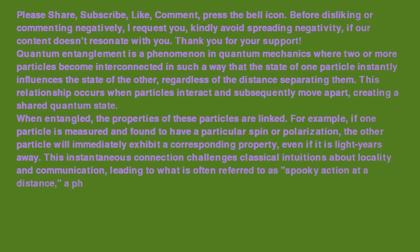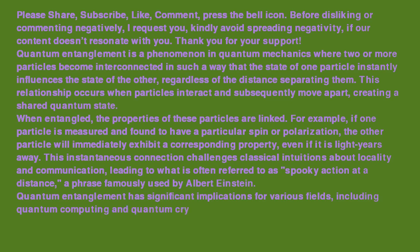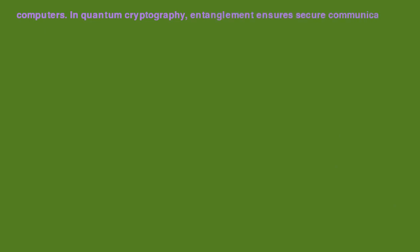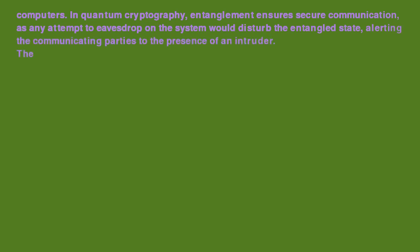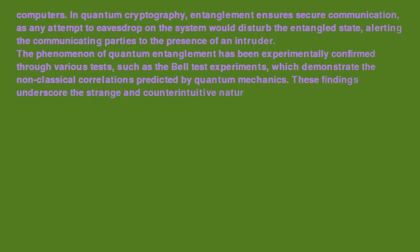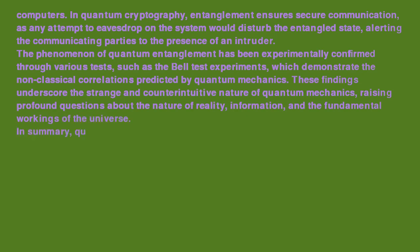Quantum entanglement has significant implications for quantum computing and quantum cryptography. In quantum computing, entangled particles are used to create qubits, the fundamental units of information that allow quantum computers to perform calculations much faster than classical computers. In quantum cryptography, entanglement ensures secure communication, as any attempt to eavesdrop on the system would disturb the entangled state, alerting the communicating parties to the presence of an intruder. The phenomenon has been experimentally confirmed through Bell test experiments, demonstrating non-classical correlations predicted by quantum mechanics and raising profound questions about the nature of reality and the fundamental workings of the universe.